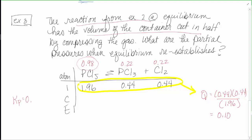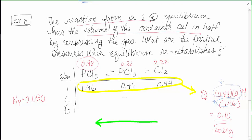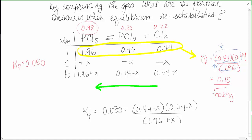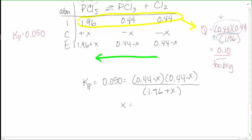The accepted Kp is 0.050, but Q = 0.10, which is too large. We need Q to get smaller to reach equilibrium, meaning the products decrease and the reactant increases — the reaction shifts to the left. That means PCl3 and Cl2 are being lost and PCl5 is being gained. I don't know by how much, so I'll call it x, and fill out the rest of the ICE table accordingly.